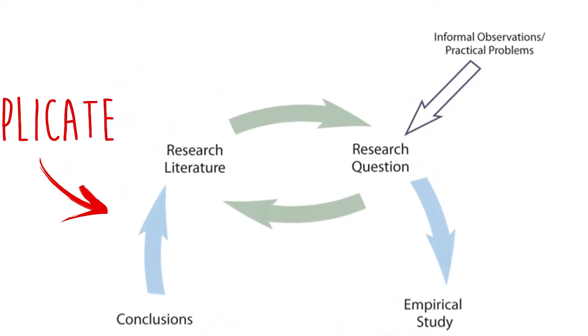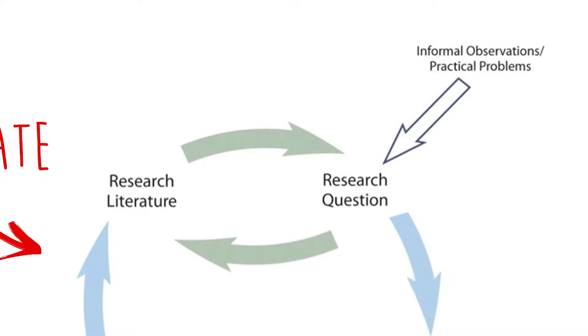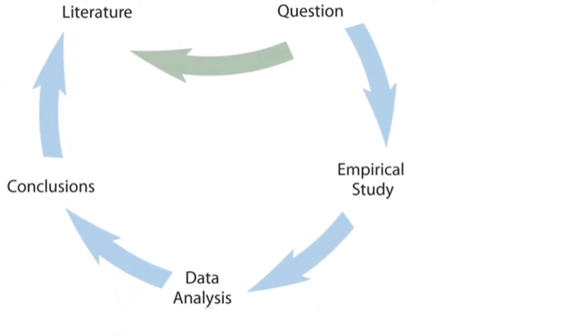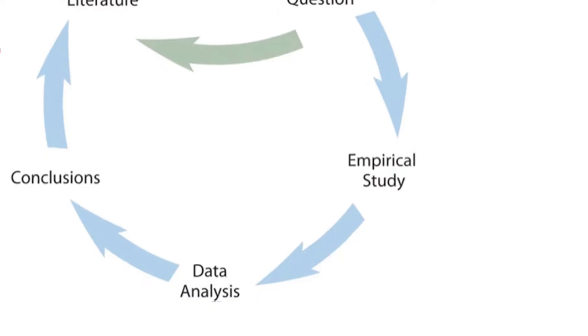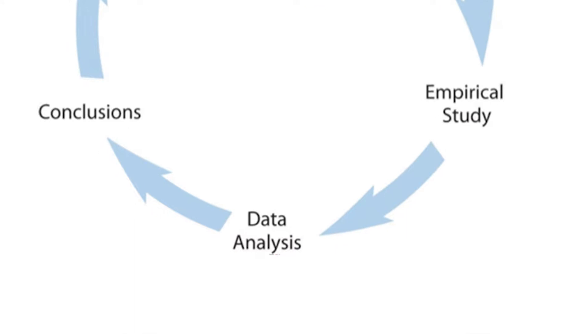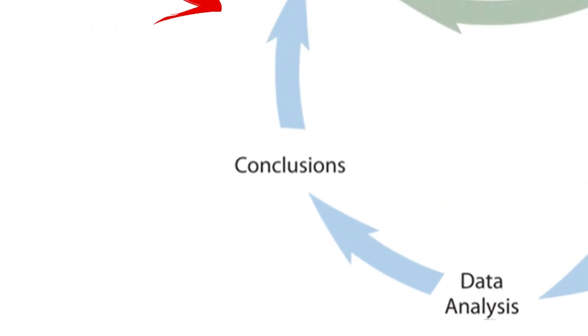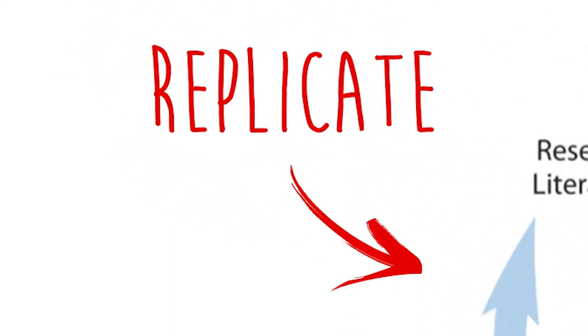If you can't tell, I'm pretty big on replication. We begin with an observation, which invites a research question. We then review the literature to see if others have already investigated this. Then we conduct an empirical study — in my case, planting the seeds. Then we measure the outcome and analyze the data, then we make tentative conclusions, then we replicate. Throughout the process we might find other questions, like: if it wasn't the soil block, what the heck was it?